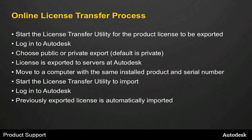Let me give you a high-level view of the online license transfer process. You'll start the License Transfer Utility for the product license you want to export. You'll be presented with a Register Today screen where you log in to Autodesk. You'll choose either a public or private export — the default is private — and then the license gets exported to Autodesk servers. At that point, you move to a computer that has the same product and serial number installed, start the LTU again to do the import, log in to Autodesk, and the previously exported license is automatically imported and the product gets activated.